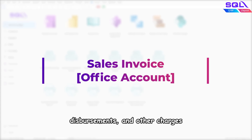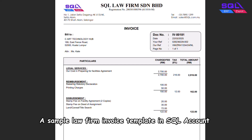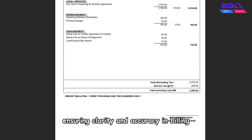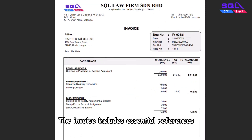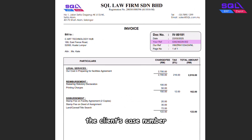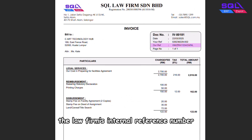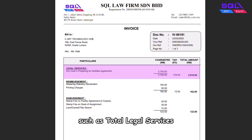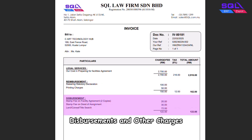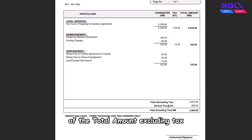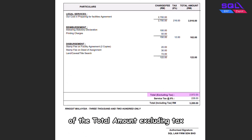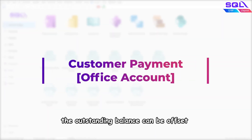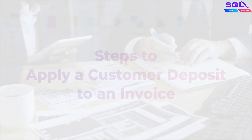Once services are provided, a sales invoice is issued for legal fees, reimbursements, disbursements, and other charges. A sample law firm invoice template in SQL Account follows a standard structure ensuring clarity and accuracy in billing. The invoice includes essential references: Your Reference (the client's case number) and Our Reference (the law firm's internal reference number). It also itemizes charges under categories such as total legal services, reimbursement, disbursement, and other charges. At the footer, the invoice provides a clear breakdown of the total amount excluding tax, total service tax, and the grand total including tax.